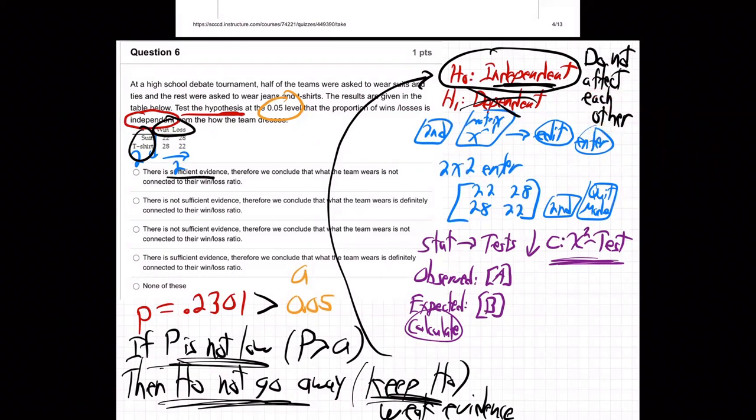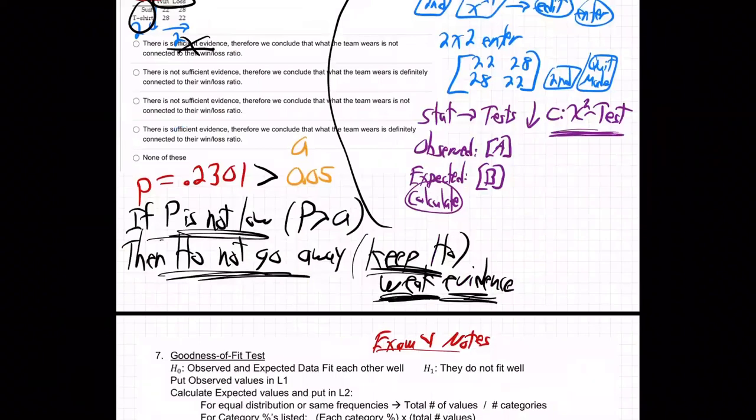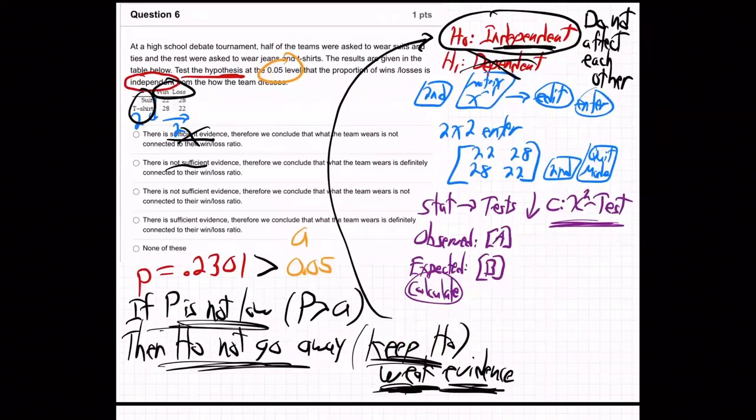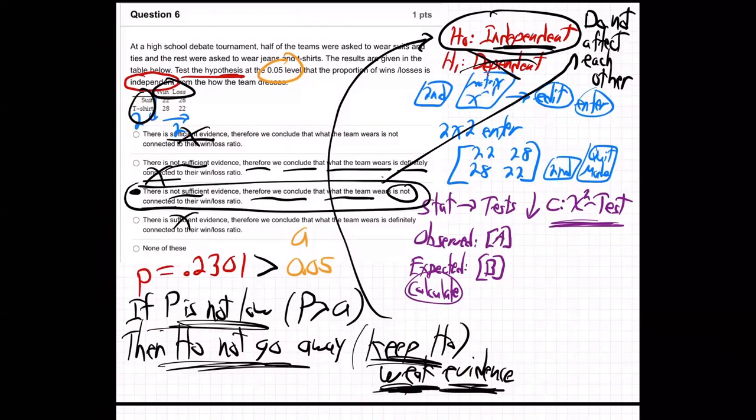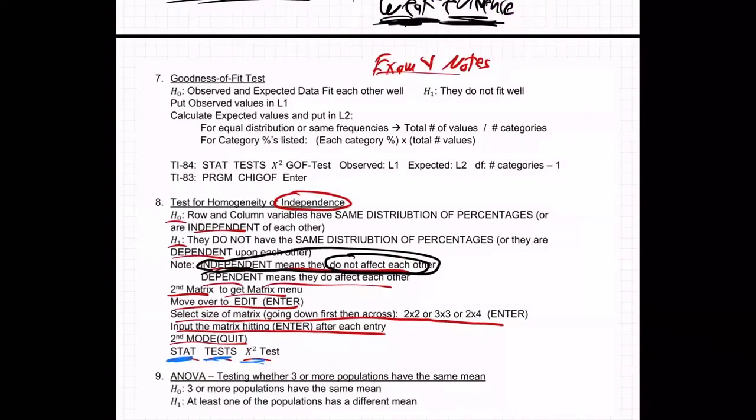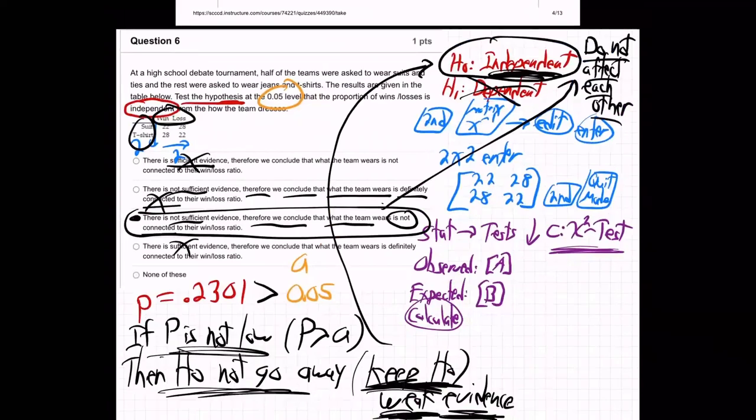Okay, let's find out. Where's that option? There is sufficient - no, no, no. We have weak. Remember down here? Weak evidence. Insufficient, not sufficient. That's good. Sufficient? No way. It's one of those not sufficient. Therefore we conclude that what the team wears is definitely connected - no. No, it's not, right? Therefore we conclude that what the team wears is not connected. Yes, it's not connected, right? Does not affect each other. We concluded we kept H0, and H0 said independent. If you're not clear what independent means, go to the notes. Independent means they don't affect each other. If two things are independent, they're separate, they don't affect each other. So it's not connected. What the team wears is not connected, does not affect their win-loss ratio. So there we go.